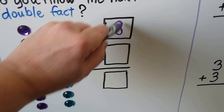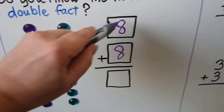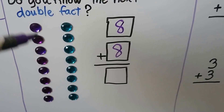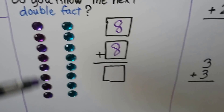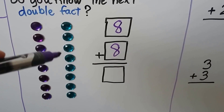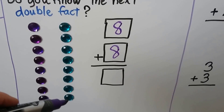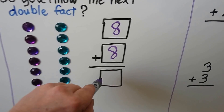8 plus 8. We can count on from 8: 9, 10, 11, 12, 13, 14, 15, 16.